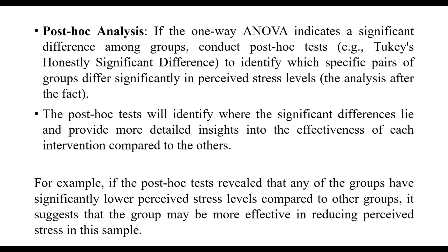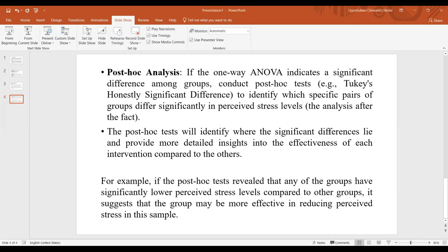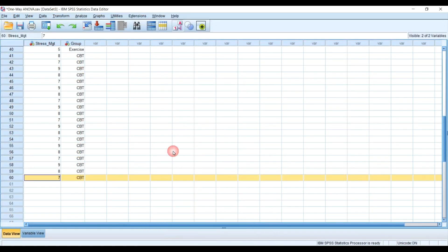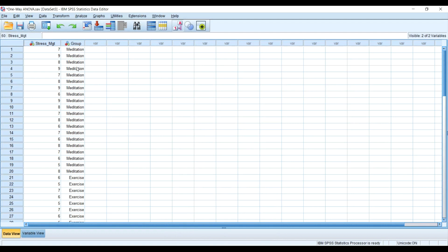If we find a statistically significant difference, that indicates a significant difference among groups, so we conduct a post-hoc test. For example, Tukey's Honestly Significant Difference test is used to identify which specific pairs of groups differ significantly in perceived stress levels. The post-hoc test is referred to as analysis after the fact, and it will identify where the significant difference is to provide more detailed insight into the effectiveness of each intervention compared to others. All three techniques — mindfulness meditation, aerobic exercise, and cognitive behavioral therapy — are good, but we want to see which among them could be better.